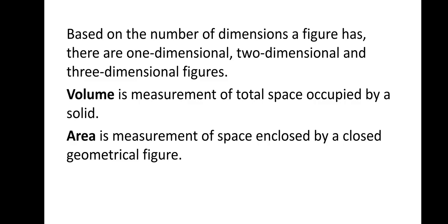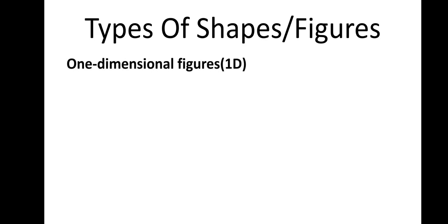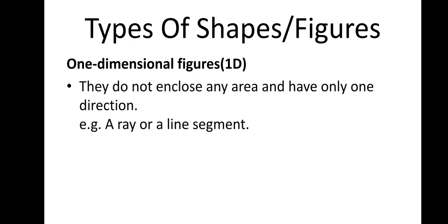Area is the measurement of space enclosed by a closed geometrical figure. Now, coming to shapes. We have 1-dimensional figures — 1D — figures having only 1 dimension. They do not enclose any area and have only 1 direction. A ray or a line segment comes under the category of 1-dimensional figures.